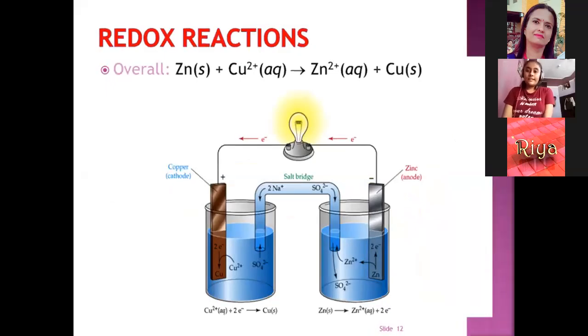Overall Zn plus Cu2 plus gives Zn2 plus plus Cu. As we can see in the below diagram, here a U-shaped tube is there which is called salt bridge and copper cathode and zinc anode is connected with each other.